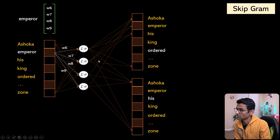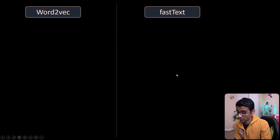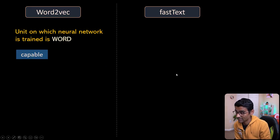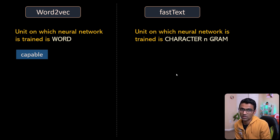For example, words like 'Ashoka', 'emperor', 'he', 'is' — these are all words on which we train the neural network. Whereas in FastText we train the neural network on character n-grams.